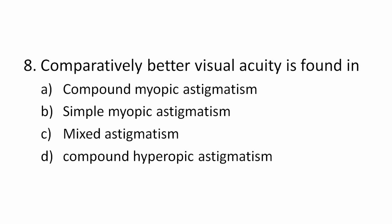Question 8: Comparatively better visual acuity is found in which type of astigmatism? Options: compound myopic astigmatism, simple myopic astigmatism, mixed astigmatism, compound hyperopic astigmatism. The correct answer is mixed astigmatism, because the circle of least confusion falls at or near the retina.